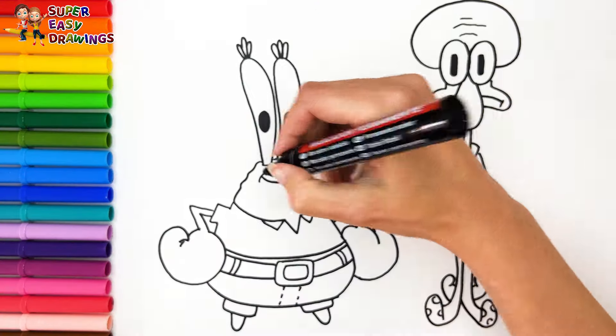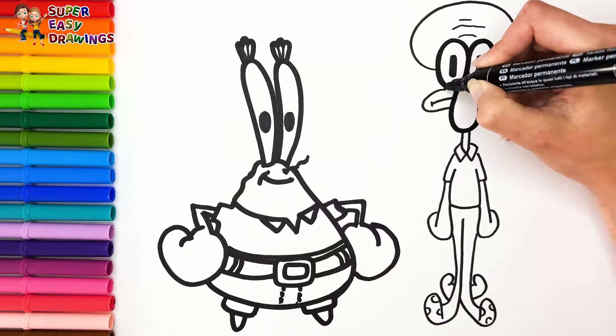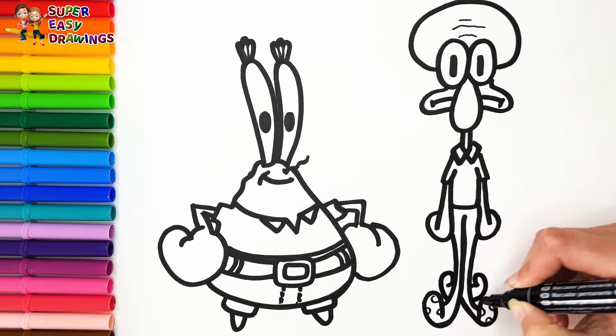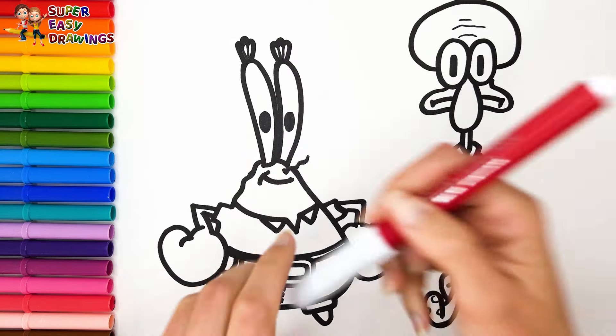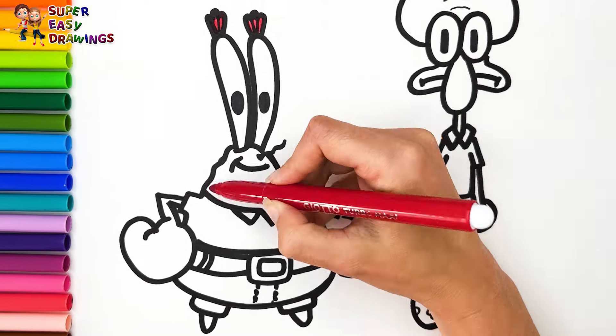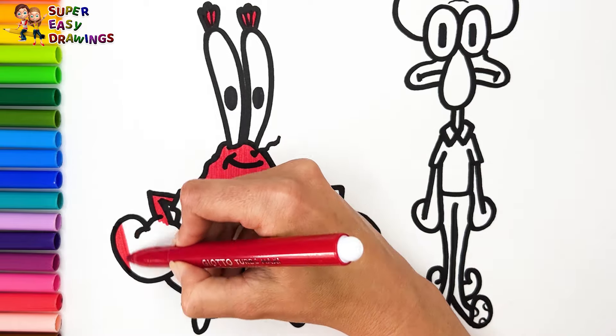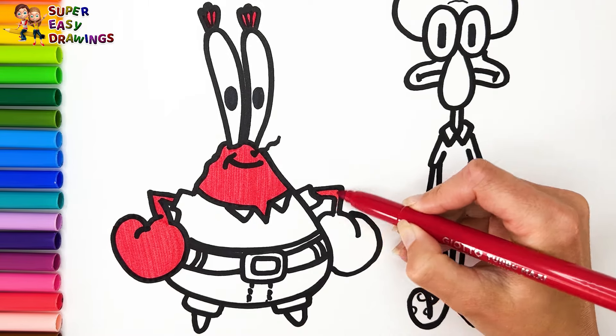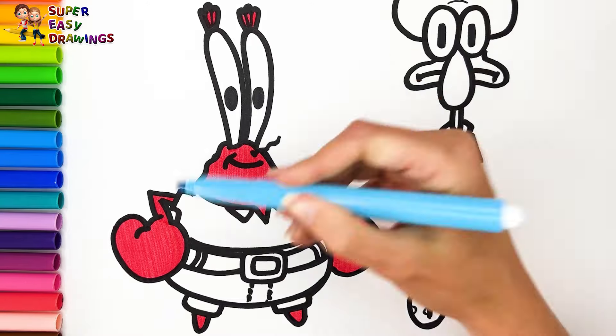Now I'm going to use this black marker to make this beautiful drawing more visible. Let's start coloring. Let's color Mr. Krabs first. I use red for his skin. Then I color his shirt with light blue.